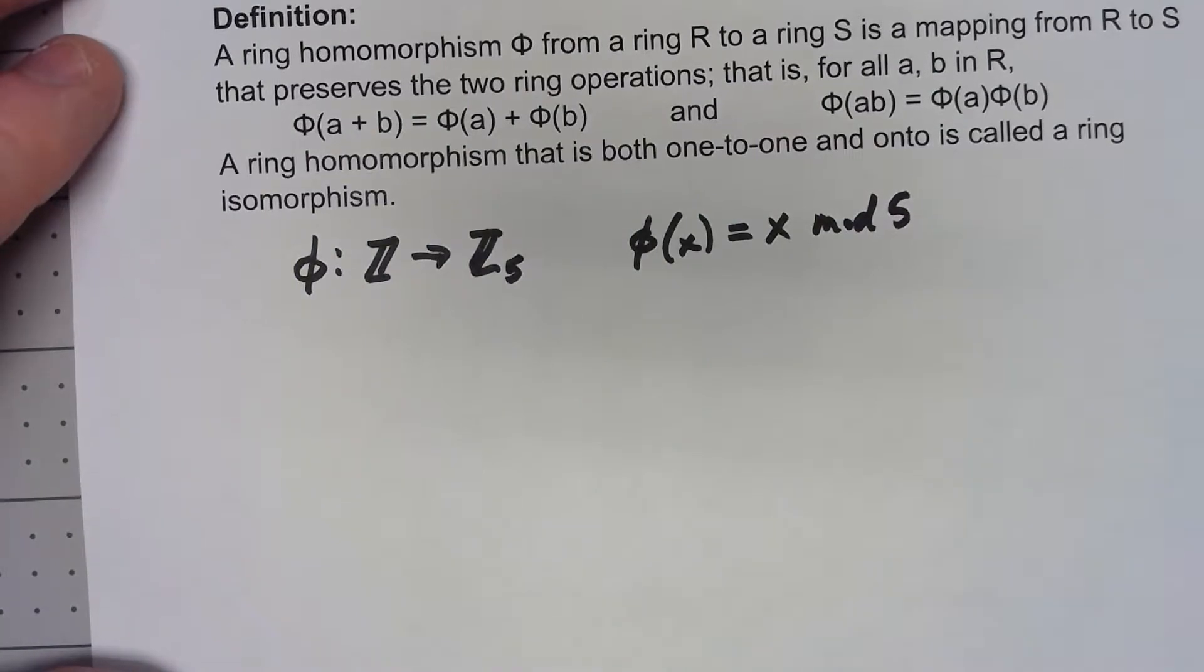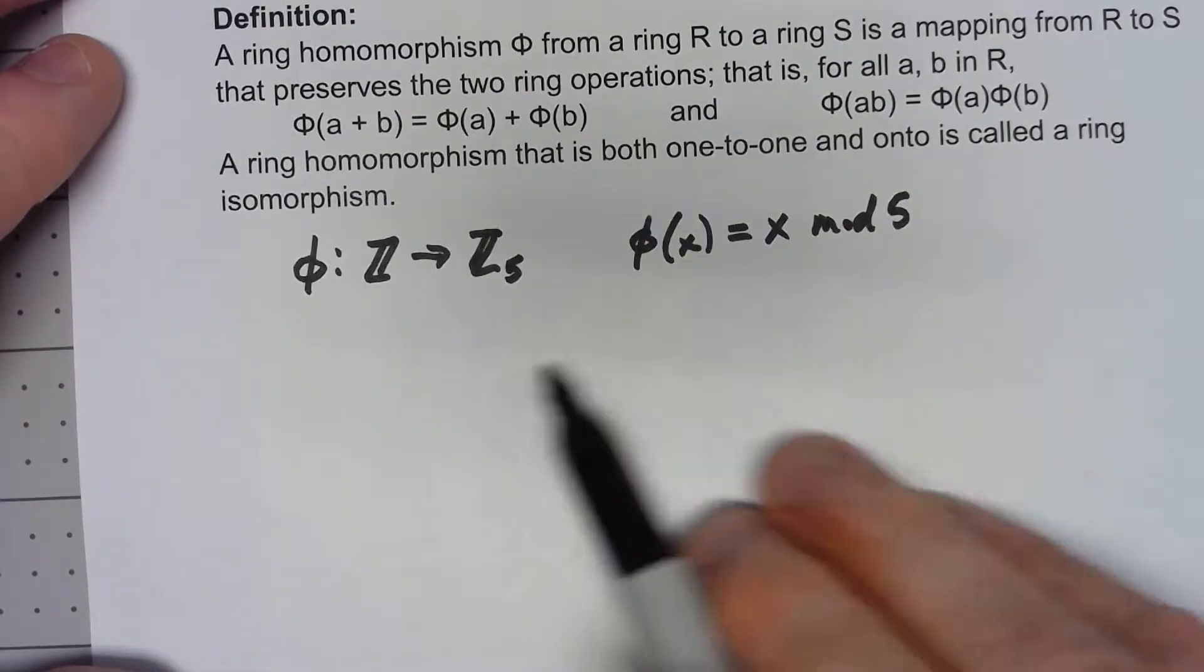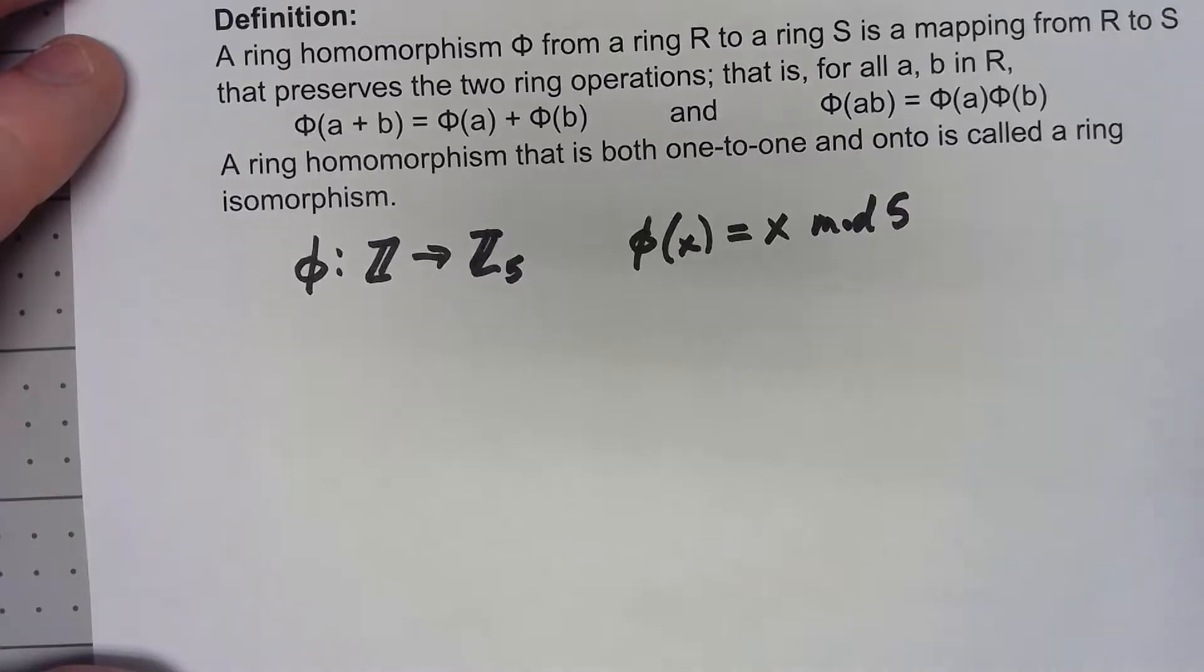Well we've done so much stuff with modular things and Z₅ and so forth that it's pretty clear to see that this operation would preserve both addition and multiplication. So that certainly would be a ring homomorphism.